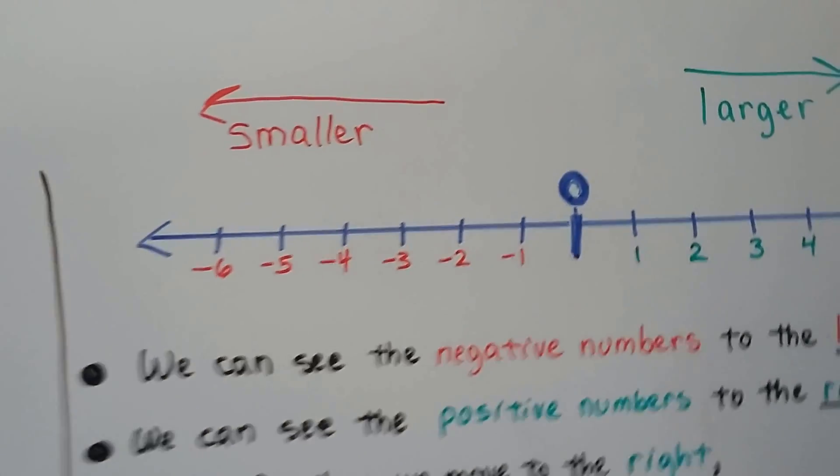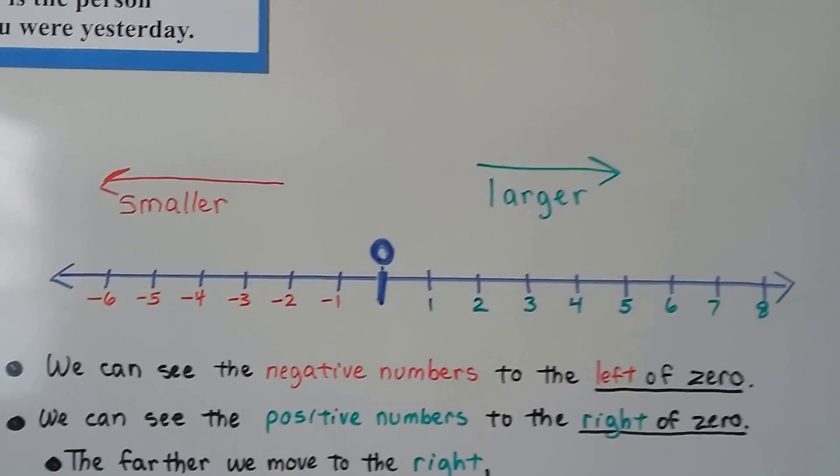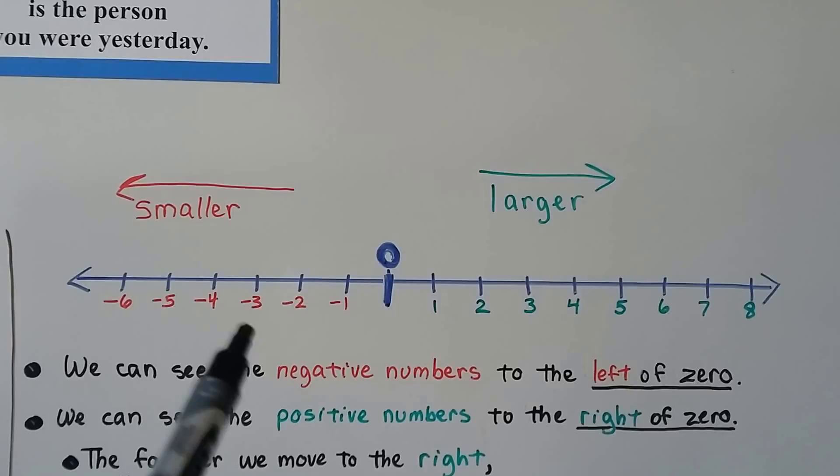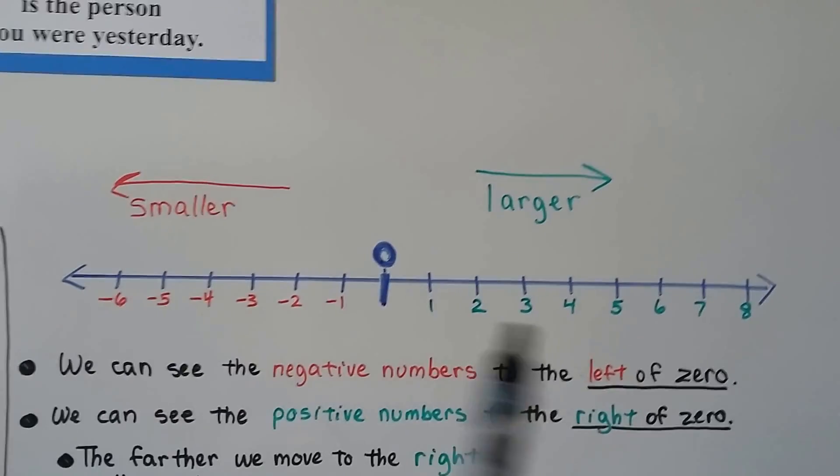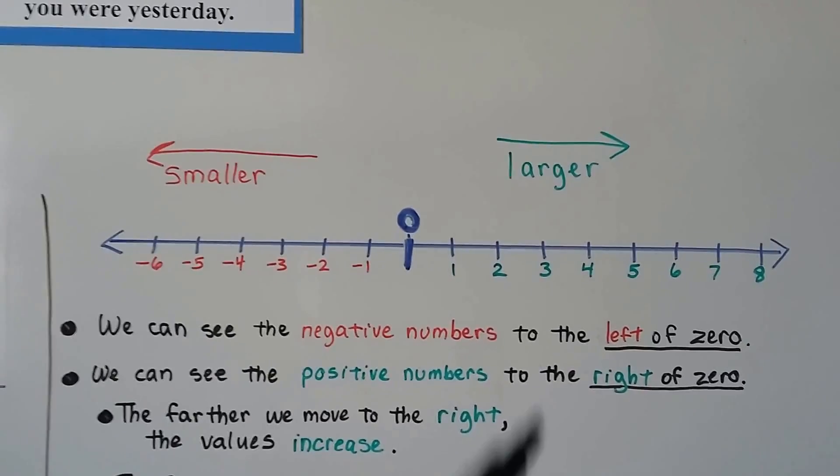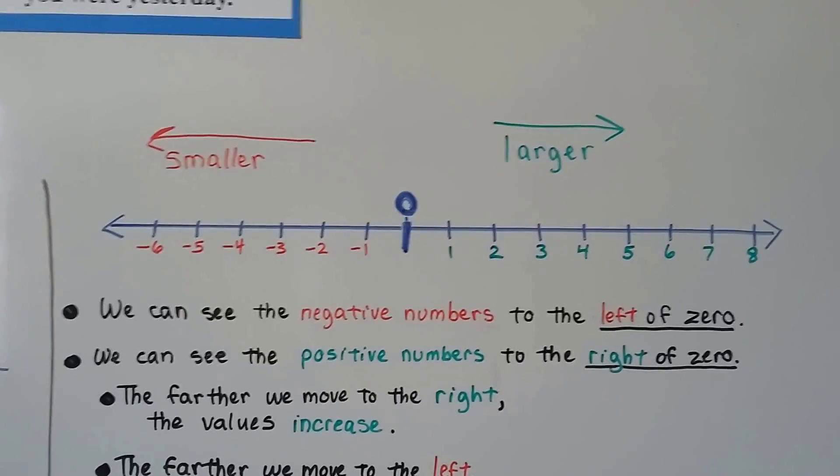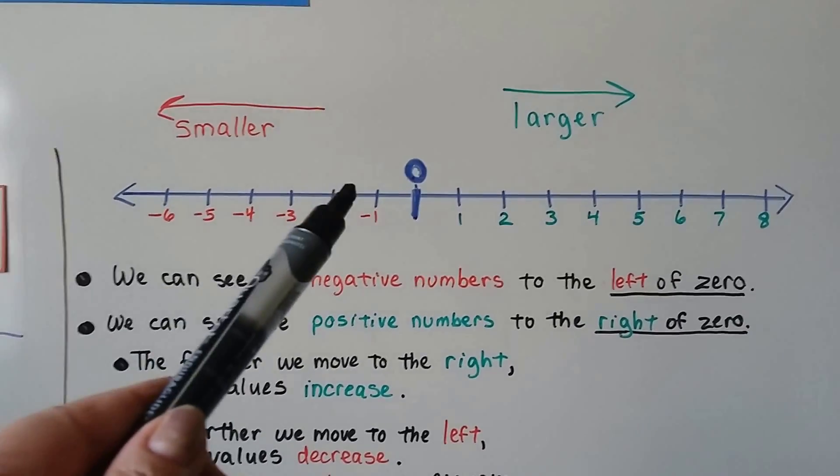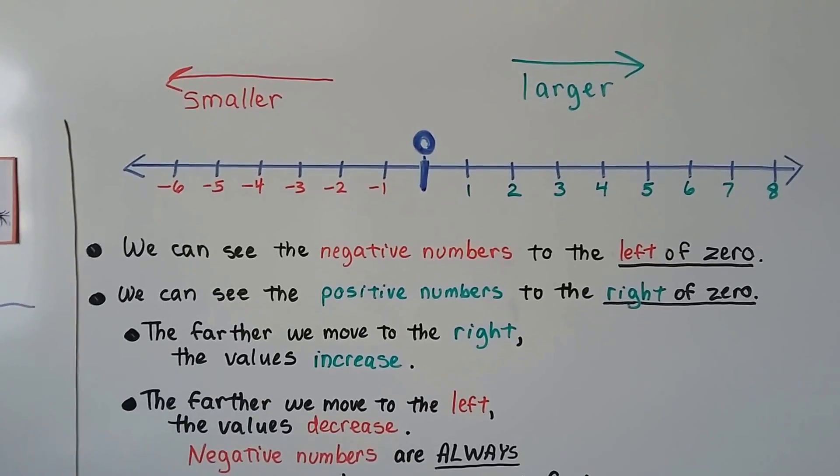So on a number line, when we look at negative and positive numbers, the negative numbers are to the left of zero and the positive numbers are to the right of zero. And the farther we move to the right, the values increase. And the farther we move to the left, the values decrease.